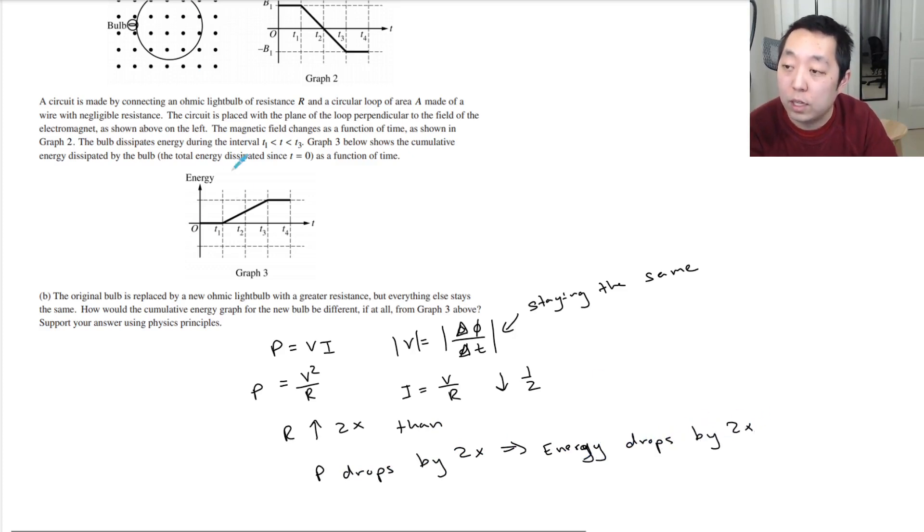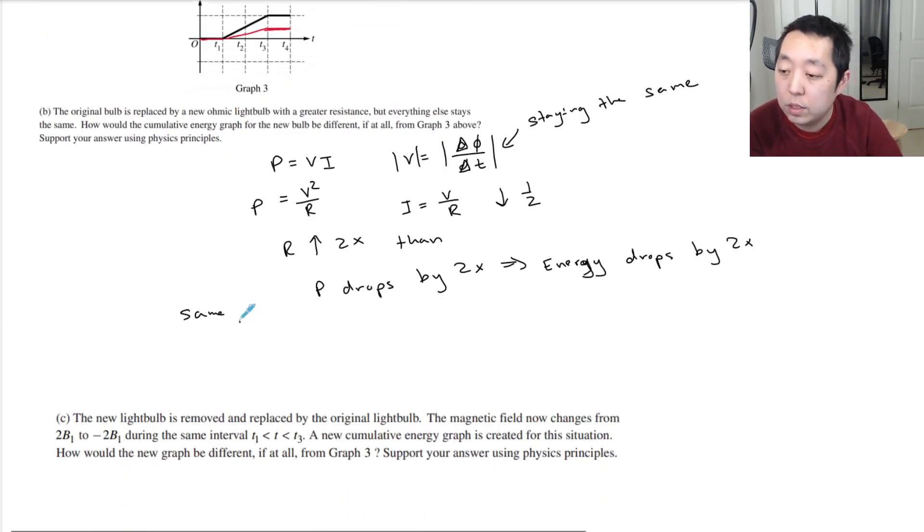The new graph would look like half of what it was before, it would look like that. So it would be the same graph, same shape, but Y values are all cut in half. That's what I would probably describe for an answer like that.